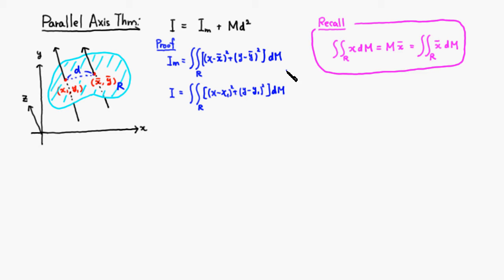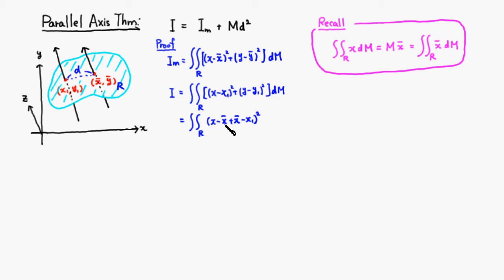In order to relate this to the moment of inertia about the center of mass, I'm going to do the following trick. I'm going to add and subtract x-bar and y-bar, because I want to get x-bar and y-bar involved. So we have (x minus x-bar plus x-bar minus x1) squared plus (y minus y-bar plus y-bar minus y1) squared.